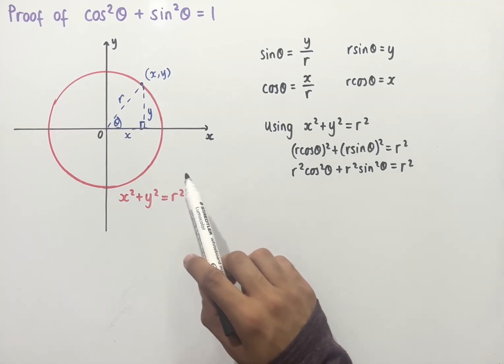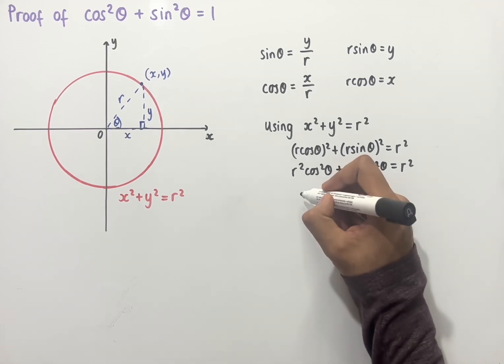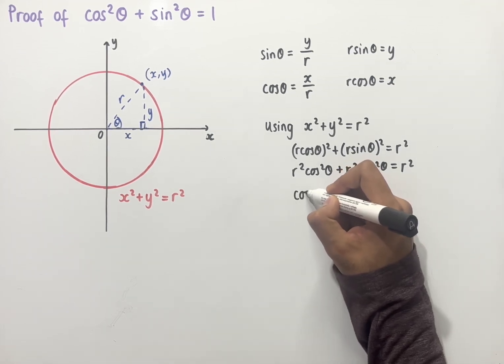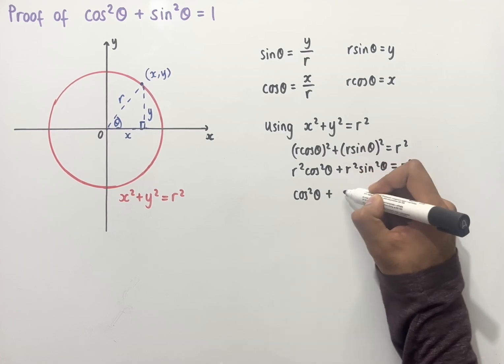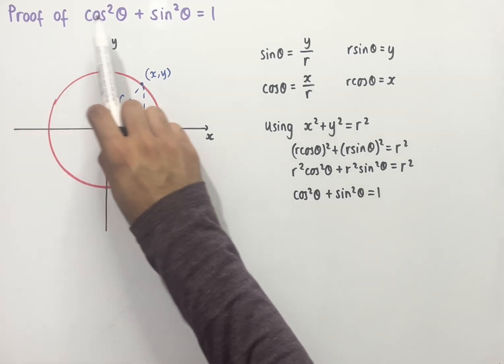And since the radius of a circle cannot equal zero, and therefore r squared is not equal to zero, we can now divide through by r squared, and so we end up with cos squared theta plus sin squared theta, which equals one. And this is the identity that we were trying to prove.